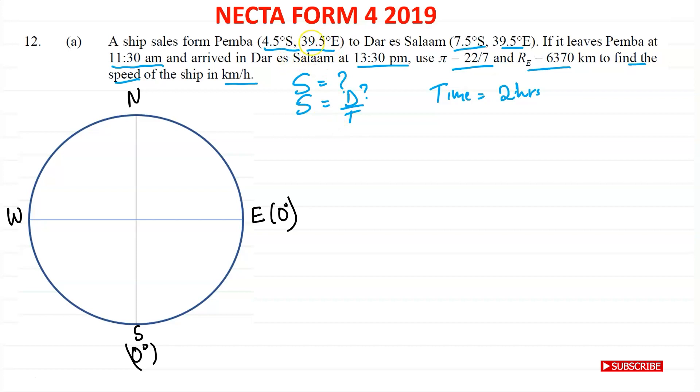Now let's use the geographical locations here to find distance. Now if you notice we have the same longitude. This ship travels on the same longitude, which is 39.5 degrees. I'm going to draw these positions in. So the first one, 4.5 degrees south. This is our zero degrees. So south is going down and let's say 4.5 is somewhere here. So this is 4.5 degrees south. I'm going to draw my latitude here. So this is my first location, which is Pemba.